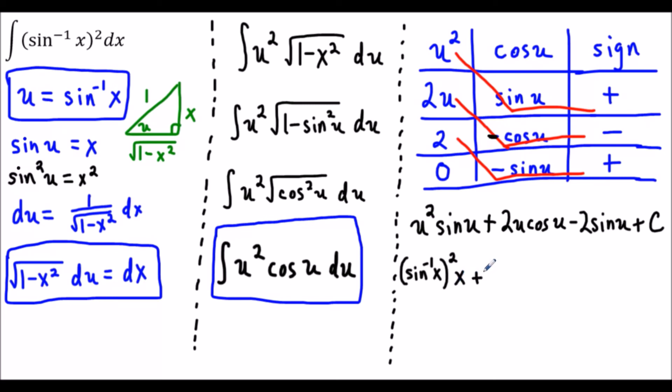So we have sine of u is equal to x plus 2 times u and u is sine inverse x. Now this next part cosine u could be tricky but the triangle is really going to help us here. Cosine of u is the ratio of the adjacent side.